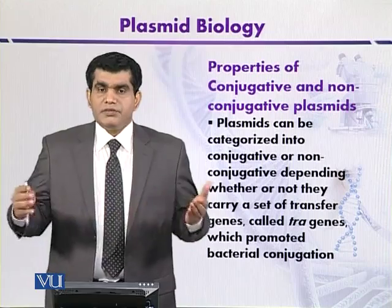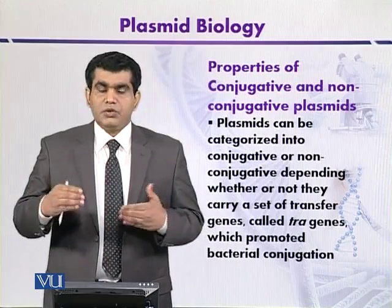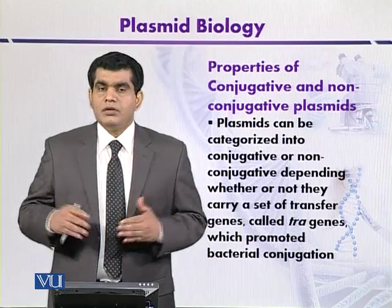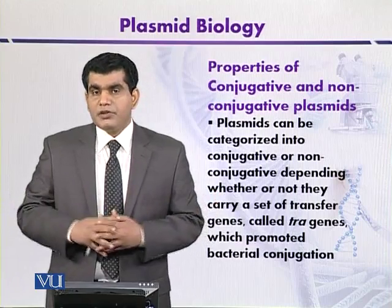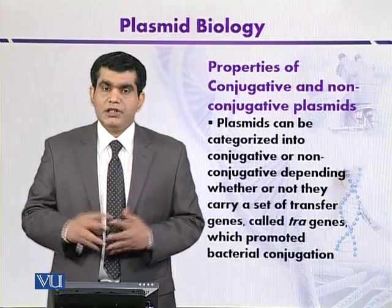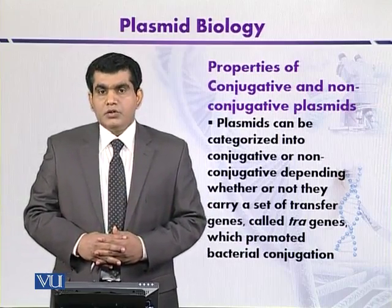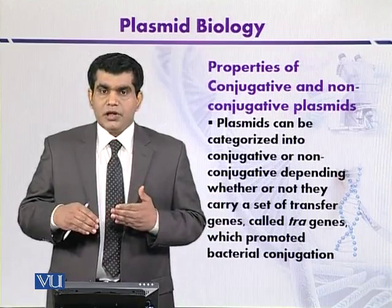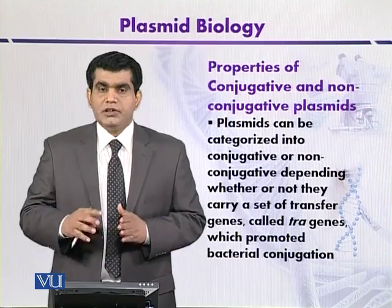So that is one classification dividing plasmids into conjugative or non-conjugative. Another classification is based upon the copy number of plasmids — how many copies are present in a particular bacterium or microorganism. Plasmids may be high copy number, also called relaxed plasmids, meaning the copy number is high.